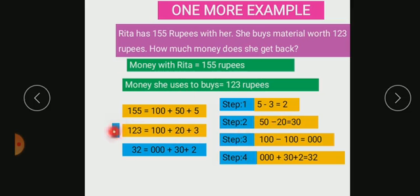Step 3, 100 minus 100, you have to subtract hundreds place. It becomes 0. Now, step 4, 0 plus 30 plus 2, it becomes 32. Now, if you subtract 123 from 155, you will get 32.